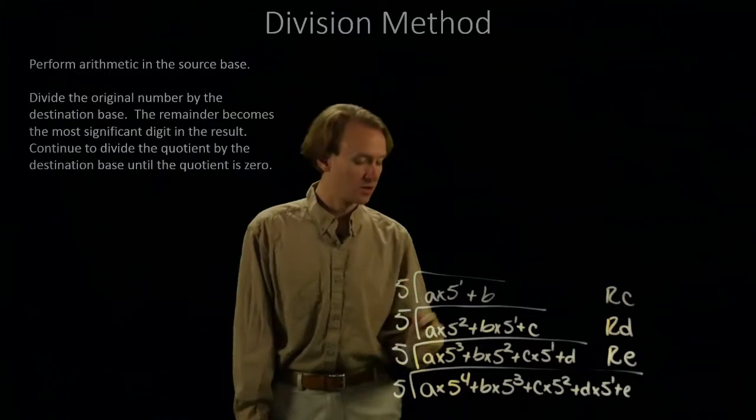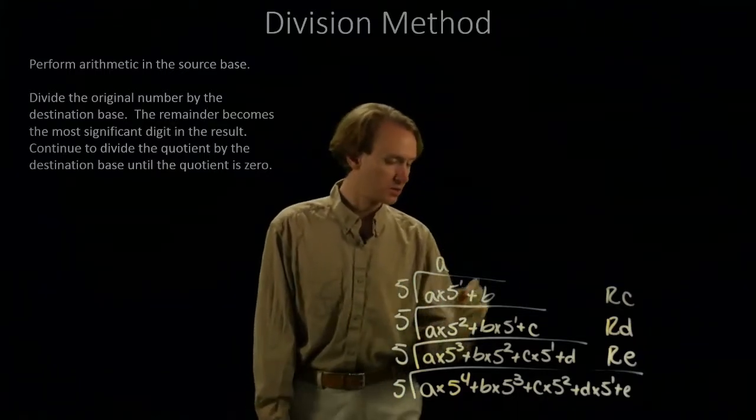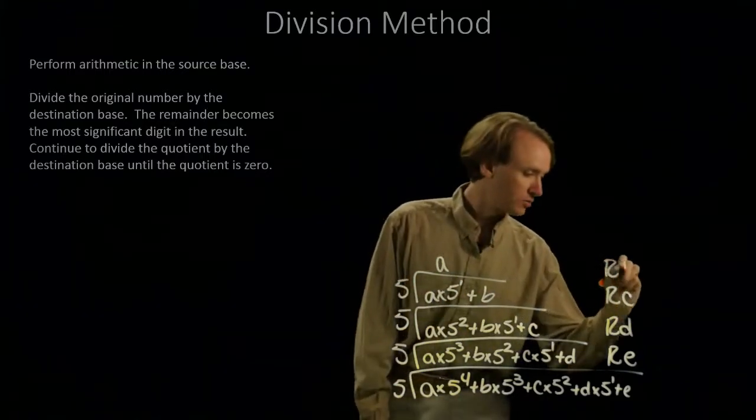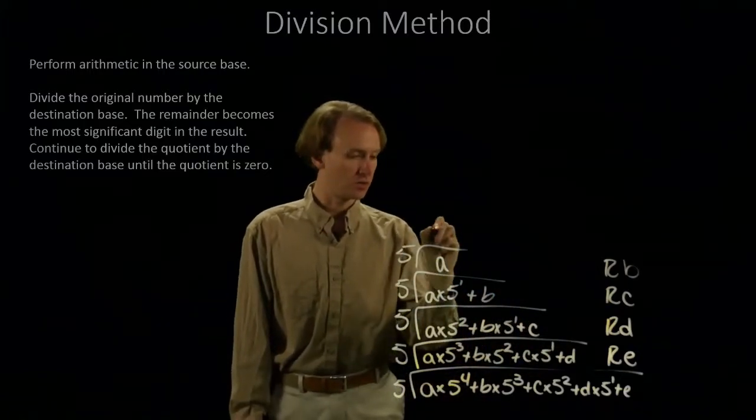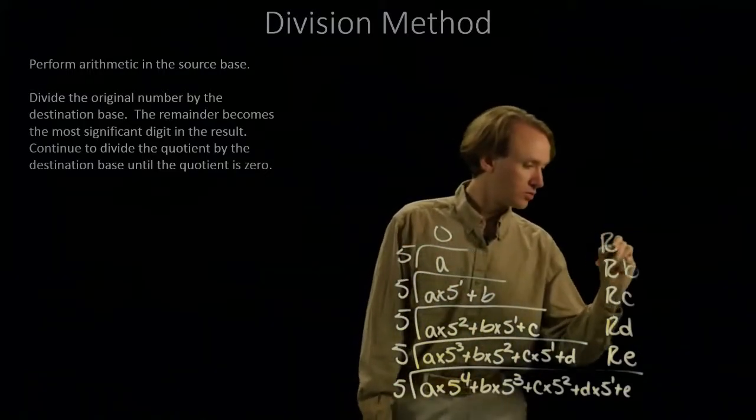If I divide this by 5, I'll get a with a remainder of b. And now, I'll get 0 with a remainder of a.